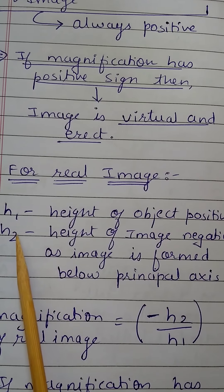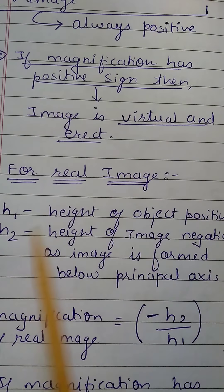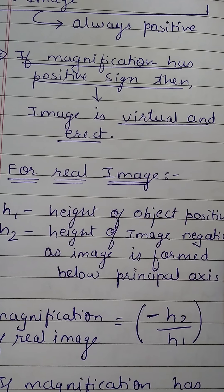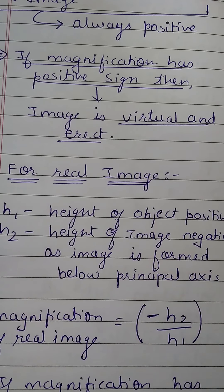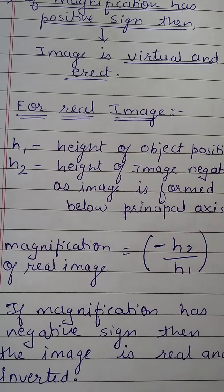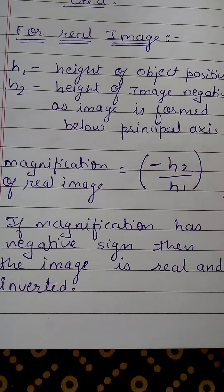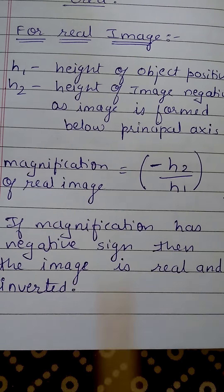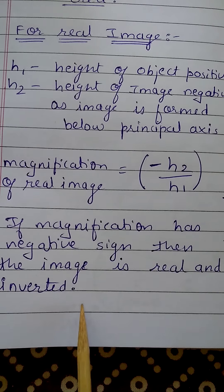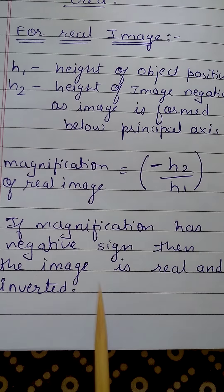For real images, H1 is the height of the object which is always positive, and H2 is the height of the image which is negative as the image is formed below the principal axis. So magnification of real images is minus H2 upon H1. If magnification has a negative sign, then the image is real and inverted. In problem sums, if magnification is given with a minus sign, the image is real and inverted.